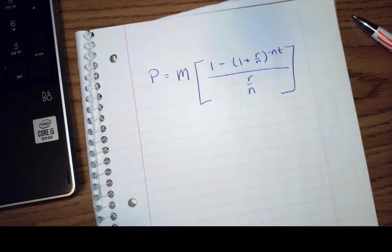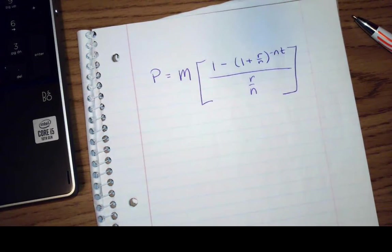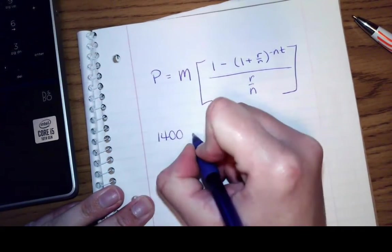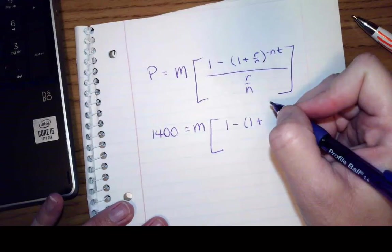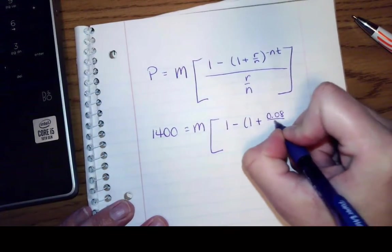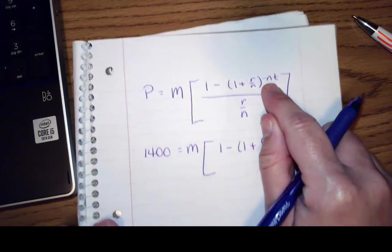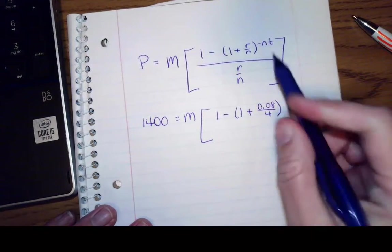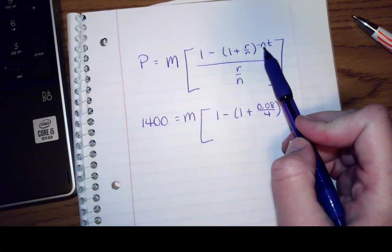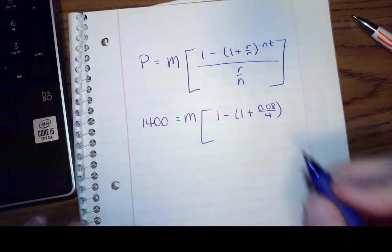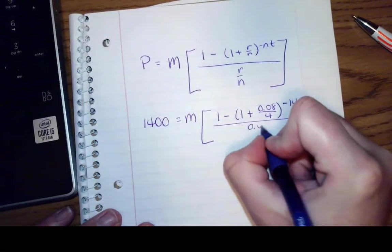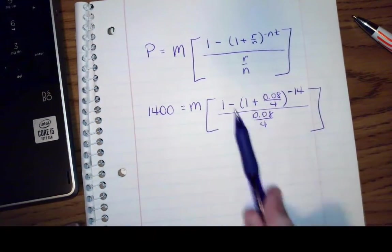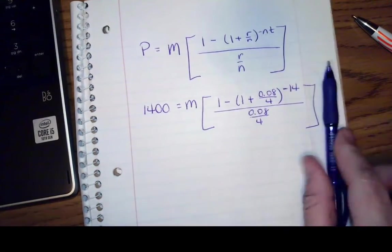In this case it says find the payment necessary, so I'm looking for M, to amortize an 8% loan of $1,400. It's compounded quarterly. So my present value is $1,400, it's compounded quarterly, I'm looking for M. And I've got 1 minus 1 plus my interest rate is going to be 8% quarterly. And now this time they've told me what N and T are because they said I've made 14 quarterly payments. So I'm going to find this answer first and then take $1,400 divided by that answer and I'll be able to figure out what my payment is.